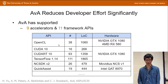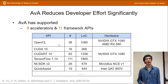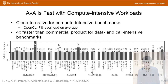Now let's move to the evaluation of AVA. We have used AVA to virtualize 9 accelerators and 11 framework APIs, and 7 of them were not virtualized before. Most of them can be virtualized in a few days or a few weeks, which is much faster than existing virtualization systems. We also measured the end-to-end performance and ran many different benchmarks — most have close to native performance. Some benchmarks have non-trivial overheads because they are data or call intensive. However, when running the same benchmarks on existing systems, AVA is four times faster than a commercial product and even faster than other virtualization systems.